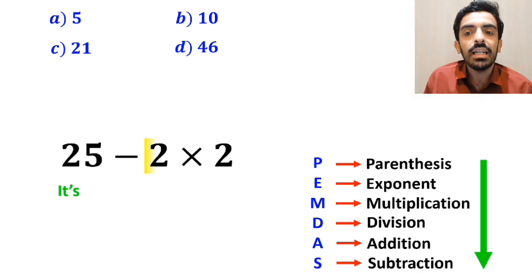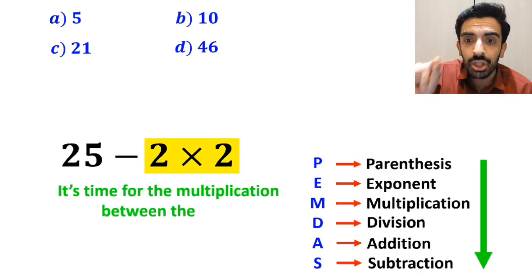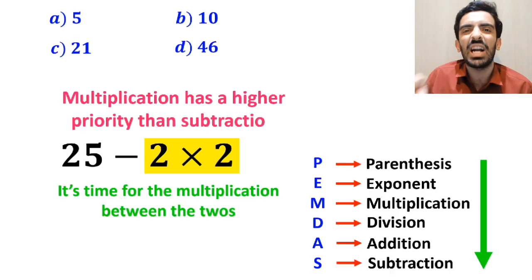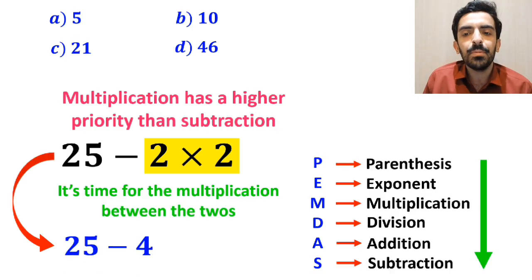In the final step, it's time for the multiplication between the twos, because multiplication has a higher priority than subtraction. So, we'll write this expression as 25 minus 4, which ultimately gives us the answer 21.